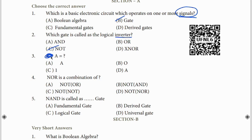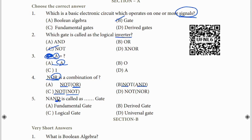Fourth question: NOR is the combination. Question clue: NOR is NOT OR. Not OR, not OR - so NOT and OR combined. The answer is OR with NOT. Fifth and last question of Lesson 2: NAND - the answer is a derived gate.